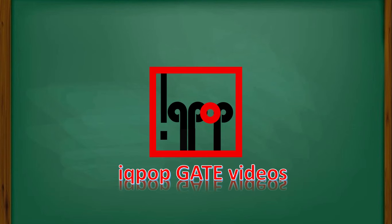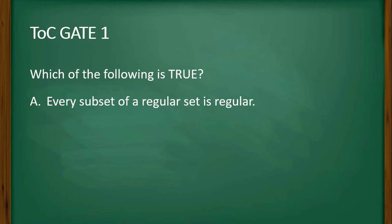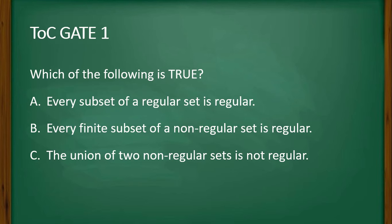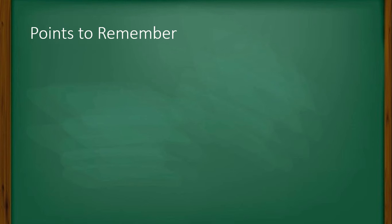Hello all, welcome to IQ Pop. Here are the IQ Pop GATE videos. The first question is from TOC: which of the following is true? Option A: every subset of a regular set is regular. Option B: every finite subset of a non-regular set is regular. Option C: the union of two non-regular sets is not regular. Option D: infinite union of finite sets is regular.